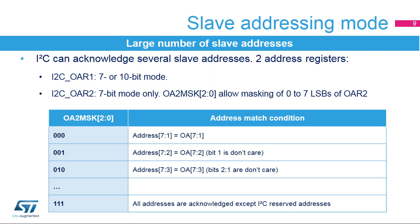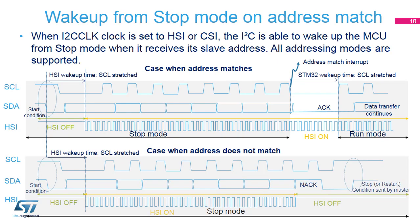The I2C slave can acknowledge several slave addresses, programmed into two registers. Own Address Register 1 can be programmed with a 7- or 10-bit address. Own Address Register 2 can be programmed with a 7-bit address, and its least significant bits can be masked through the OA2MSK register to acknowledge multiple slave addresses. Both Own Address Registers can be enabled simultaneously. The I2C peripheral supports wake up from stop mode on address matches; the I2C peripheral clock must be set to the HSI or CSI oscillator, and only the analog noise filter is supported when this feature is enabled.